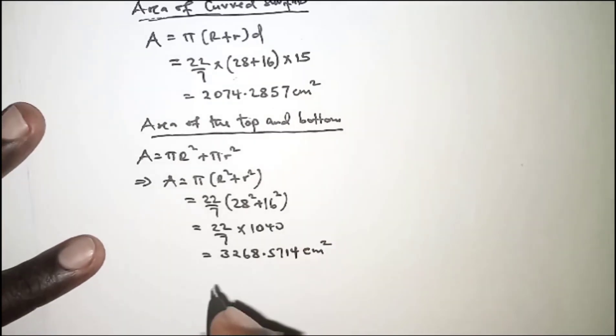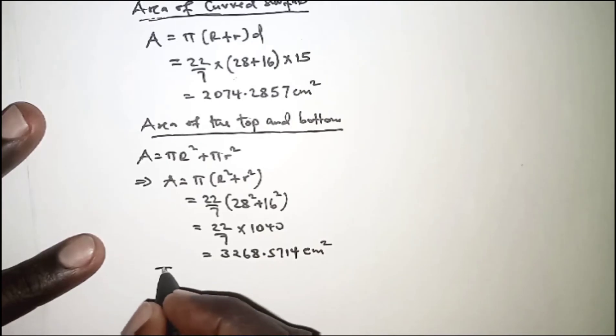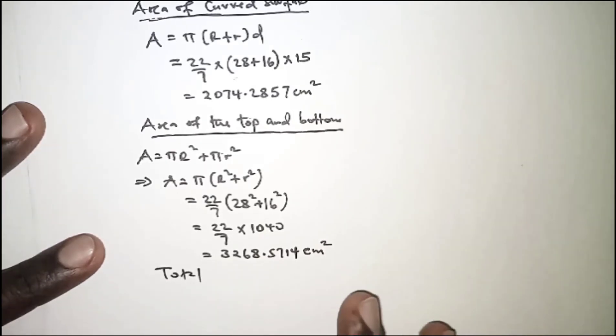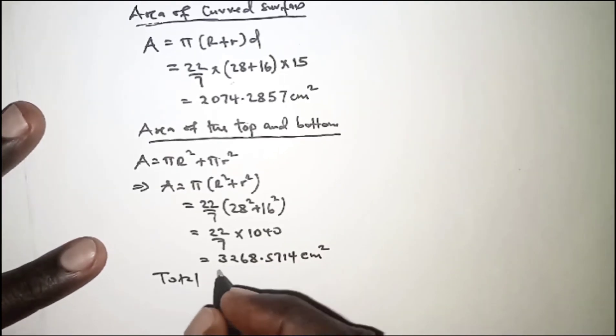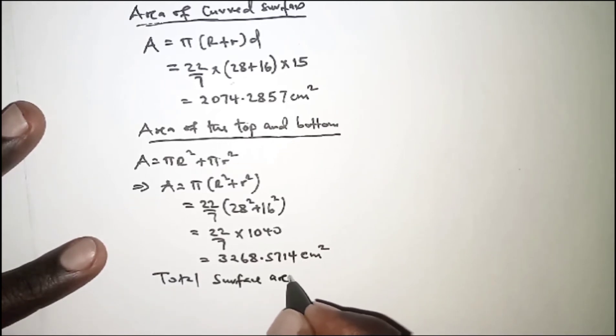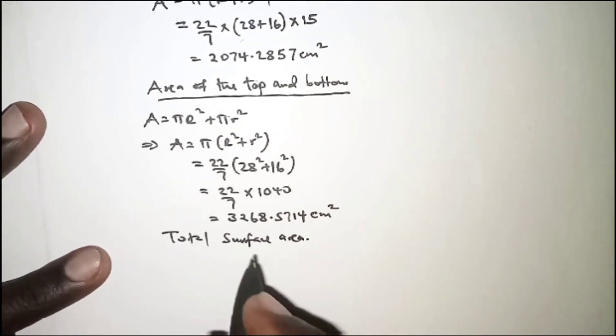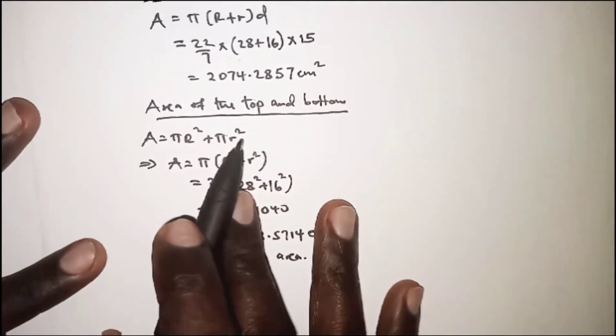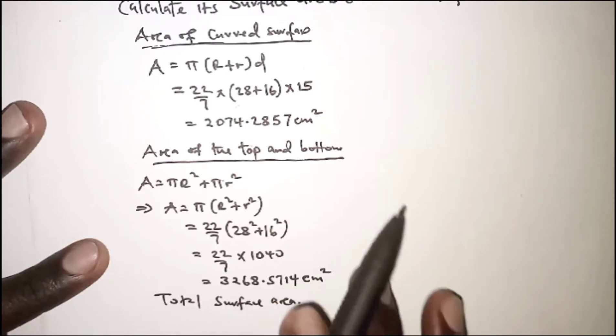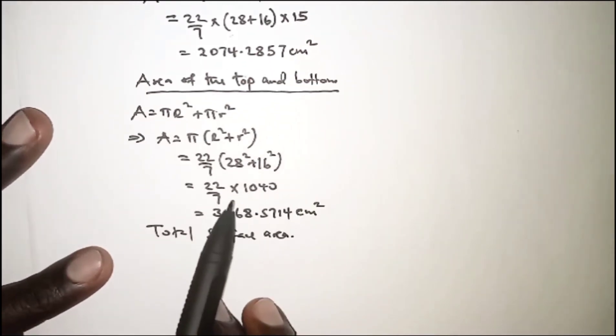So from here we can now get the total surface area. The total surface area is obtained by simply getting the area of the curved part plus the area of the top and the base.